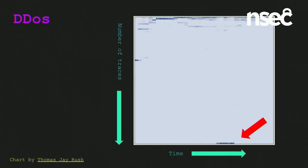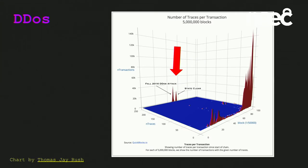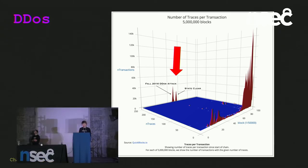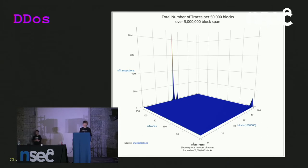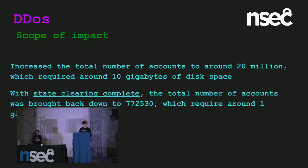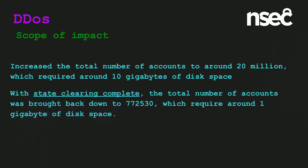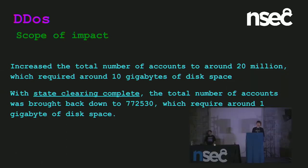This is a heat map of the number of traces per transaction on the Ethereum network — most transactions are clustered near the top, meaning small amounts of traces, but the DDoS stands out on the extreme opposite side with thousands per transaction. Another view shows the large peaks for transactions with small trace counts, and two bipolar lumps at the back — that's the DDoS and the state clearing operations. The scope of impact: the total number of accounts was increased to around 20 million, needing 10 gigabytes of disk space to store. Once state clearing was complete, accounts were brought back down to just under 800,000, only about one gigabyte of storage.